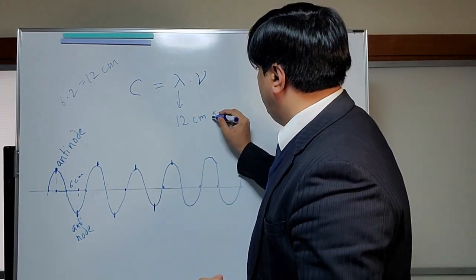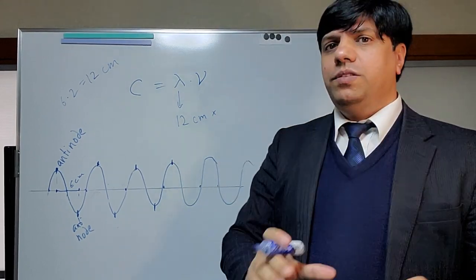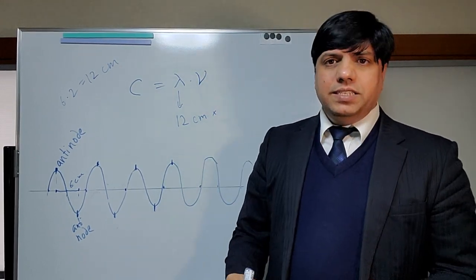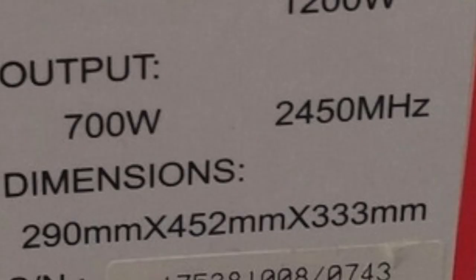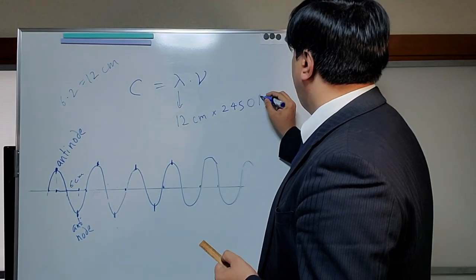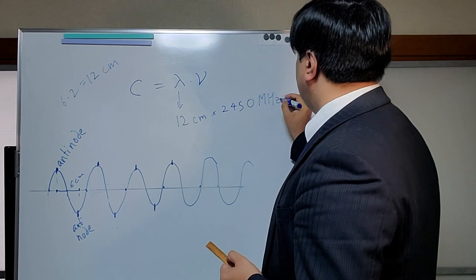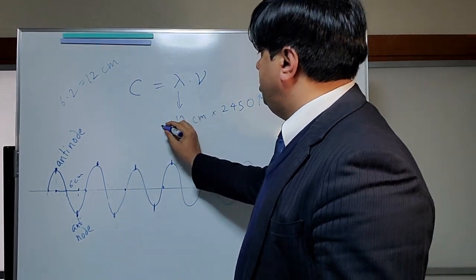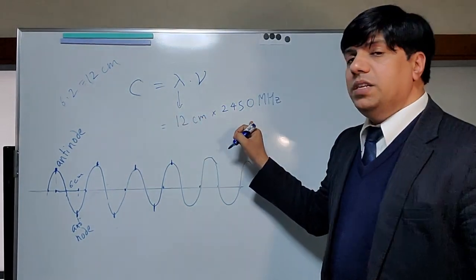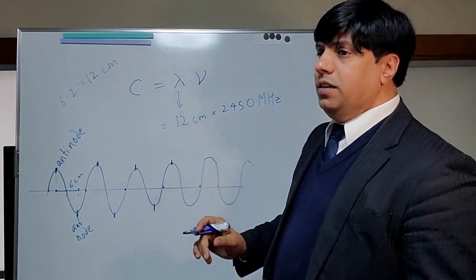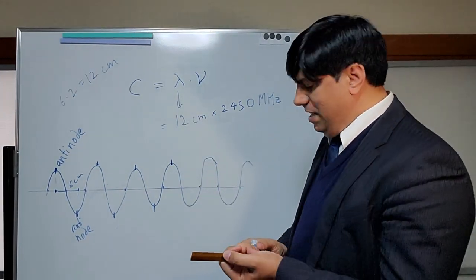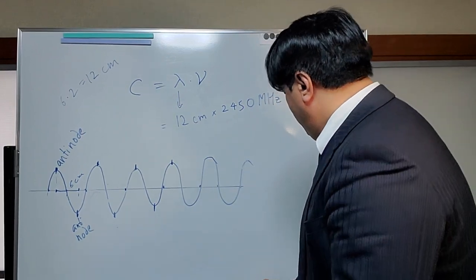And that was the only missing point of the puzzle. Because the frequency of the microwave oven is, as I told you, let me look at it one more time. It's 2450 megahertz. So just by doing this simple multiplication, we can actually find the speed of light. So simple. Let's see how to do that.